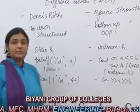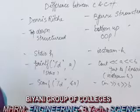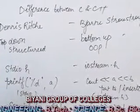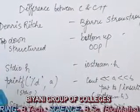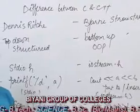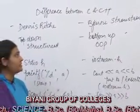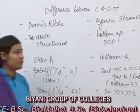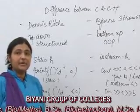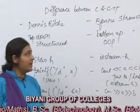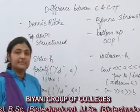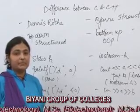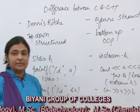C was developed by Dennis Ritchie in 1972 at AT&T, New Jersey, USA, whereas C++ was developed by Bjarne Stroustrup and it came in the early 1980s. It was developed at AT&T Bell Labs, New Jersey, USA.